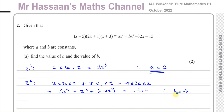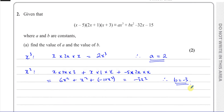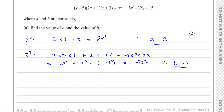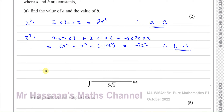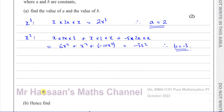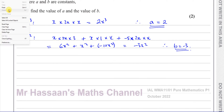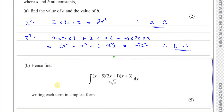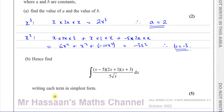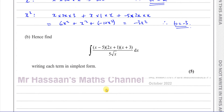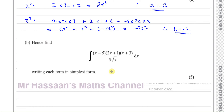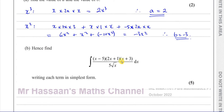So now let's move on to part b. So we've got part b over here. It says here, hence, find the integral of x minus 5 times 2x plus 1 times x plus 3, all over 5 root x, with respect to x. So we've got to integrate this expression.